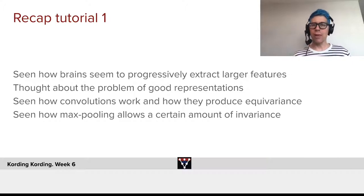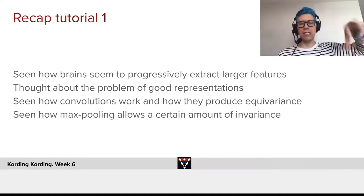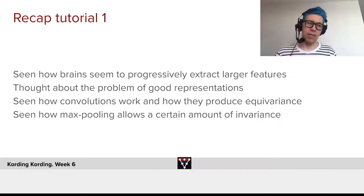And we thought a little about the problem, what makes a representation useful. And then, we've seen how convolution works, and how they produce equivariance, which is that we produce the same activity, just at a different place in the map, if we move the image a little bit.